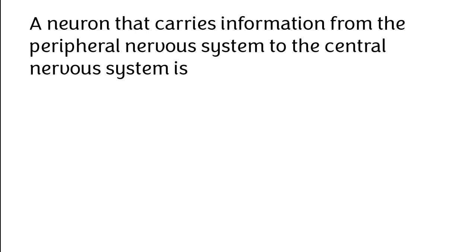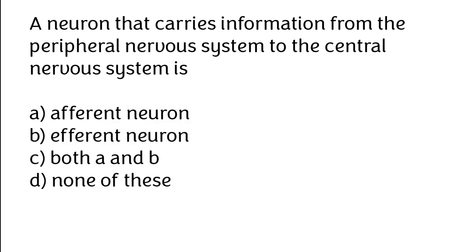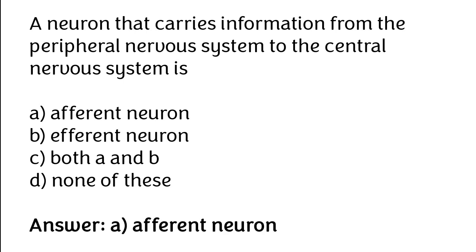A neuron that carries information from the peripheral nervous system to the central nervous system is: efferent neuron, afferent neuron, both A and B, or none of these. The correct answer is option A: afferent neuron.